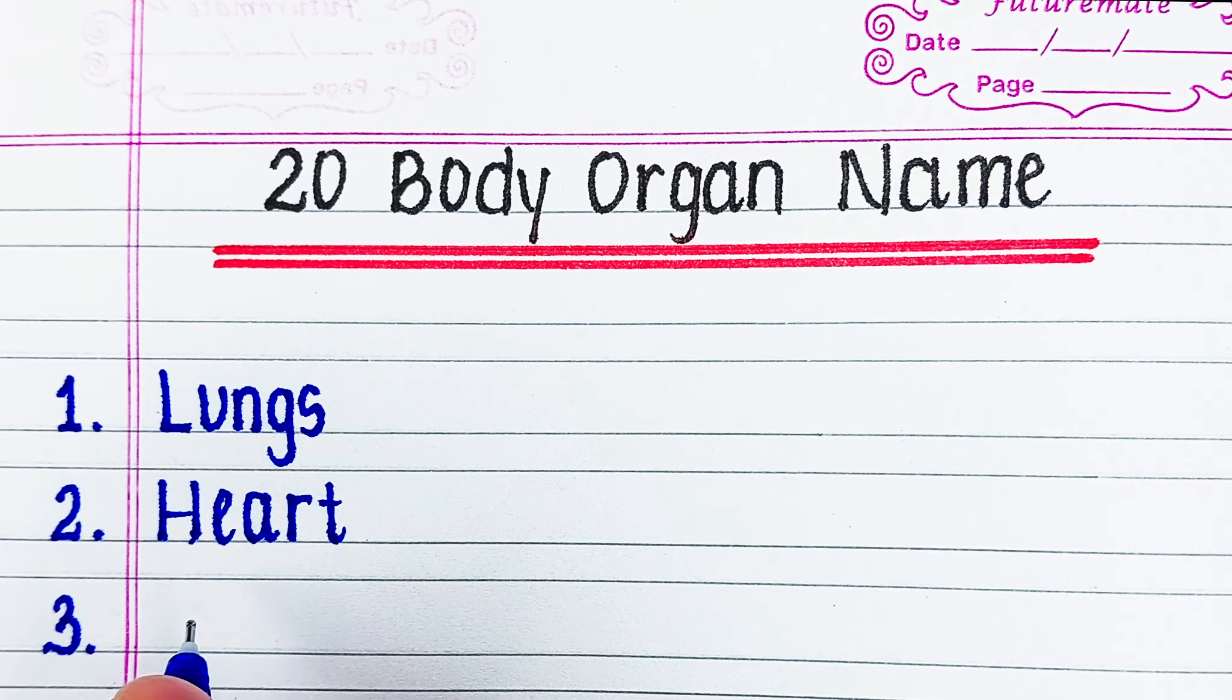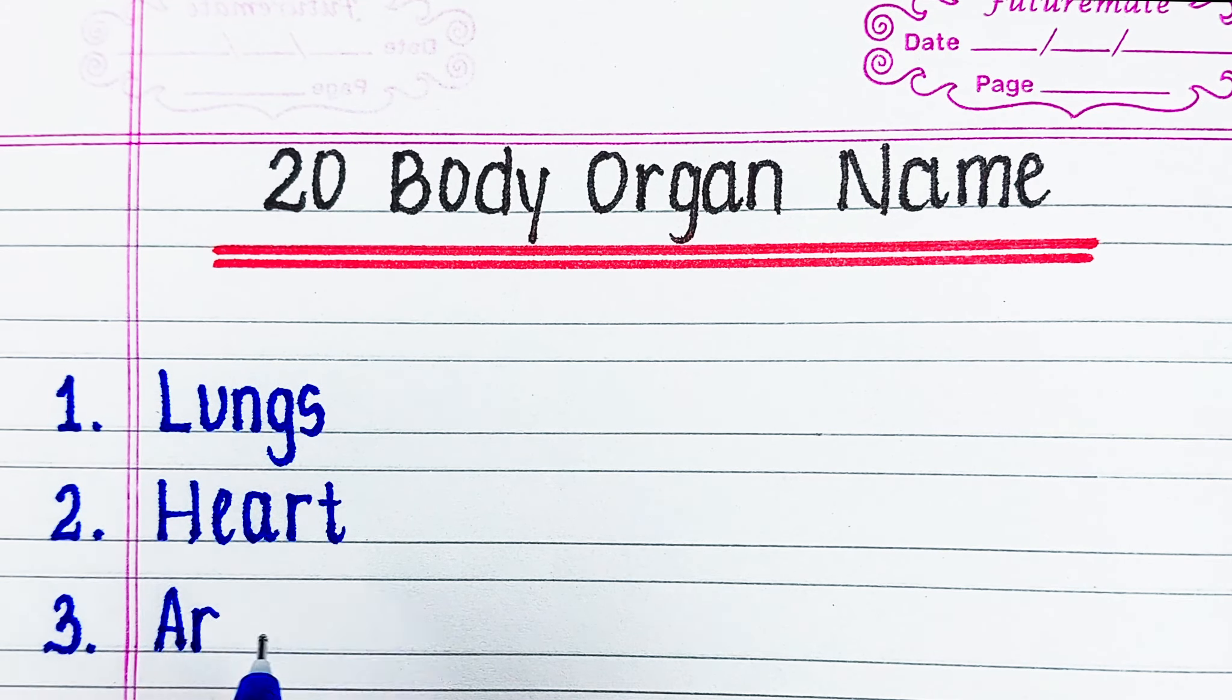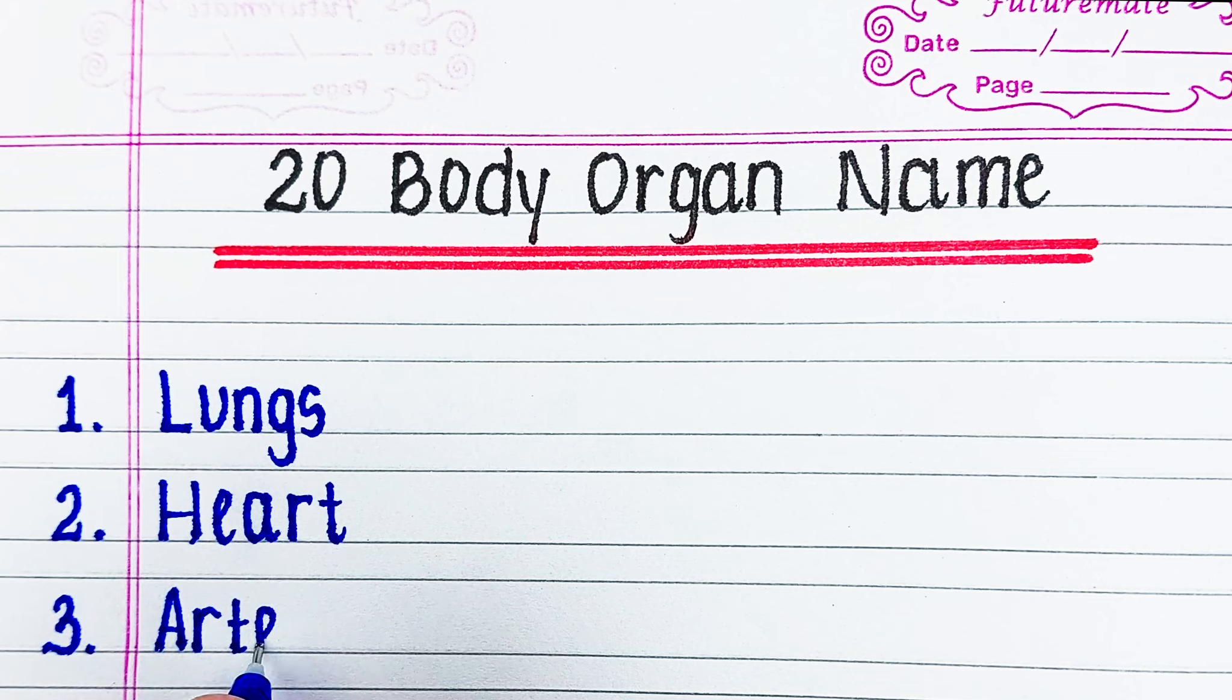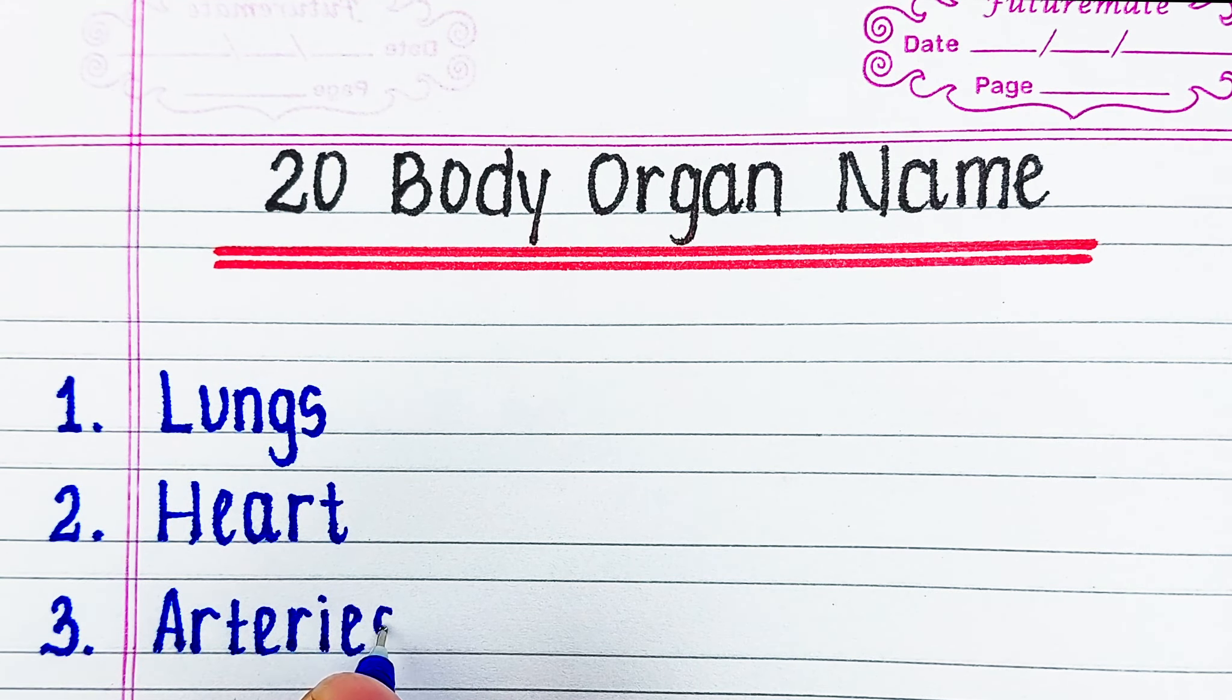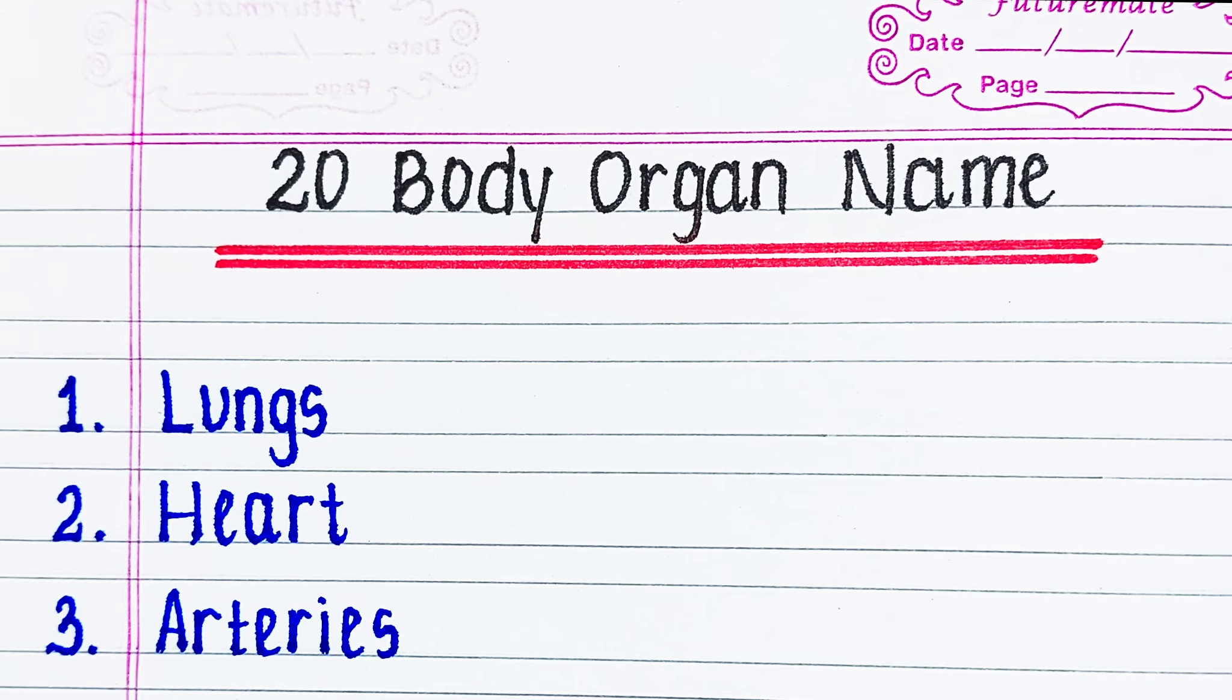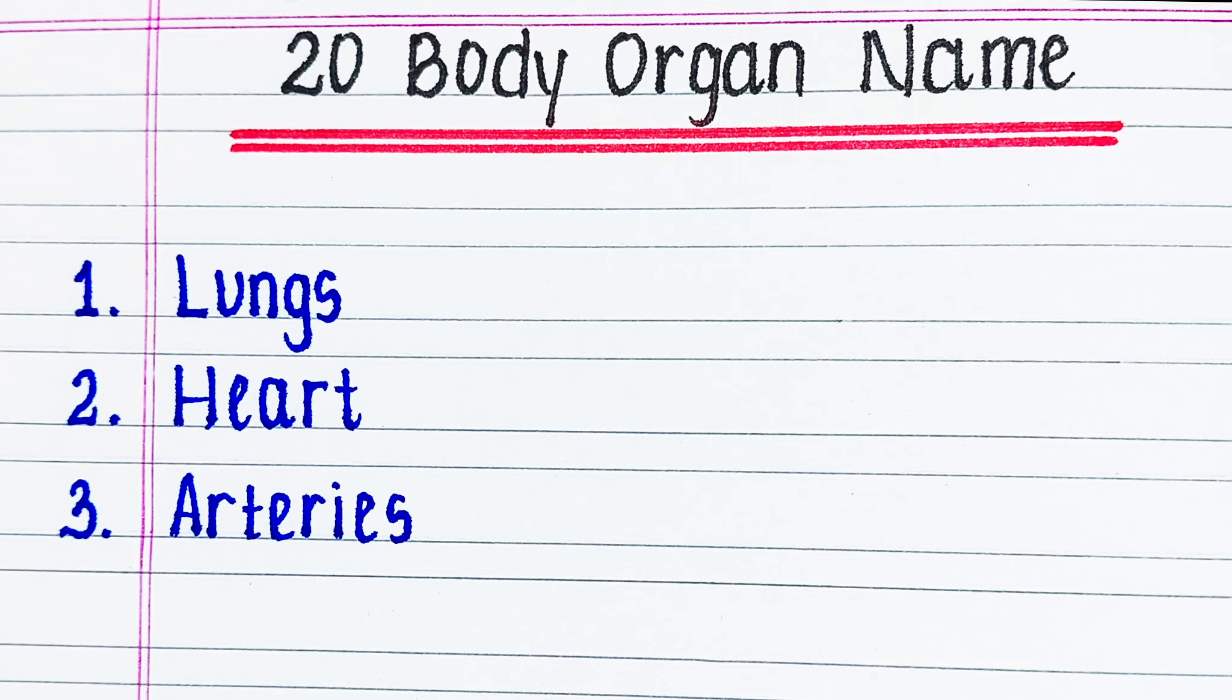Lungs. Lungs are a pair of spongy air-filled organs that are part of the respiratory system. Heart. Heart is the organ that pumps blood to our whole body.